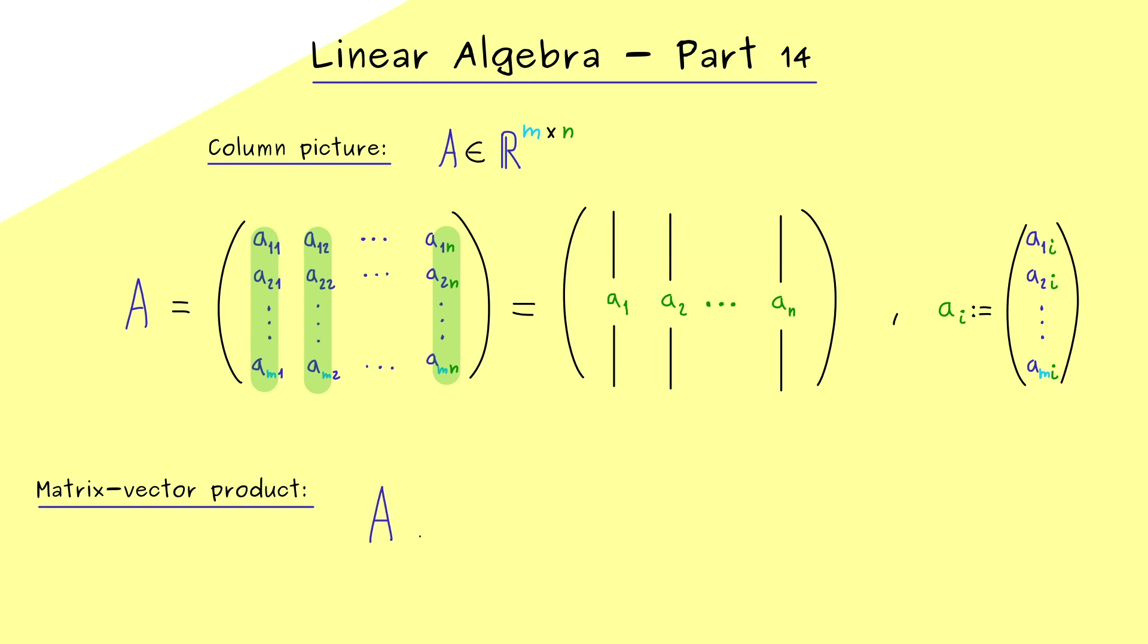Indeed, this is what we have denoted by A times the vector x. And then we know, this vector x needs as many components as we have columns in the matrix. This means, we have a vector with components x1, x2 until we reach xn.